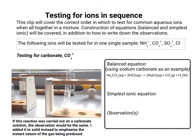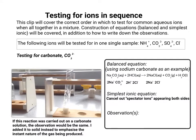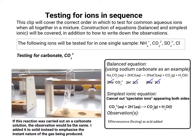For the balanced equation I'll use sodium carbonate as my example. It produces a salt (NaCl), CO₂ as a gas, and H₂O as a liquid. For the simplest ionic equation, you look at everything that is aqueous — sodium carbonate, hydrochloric acid, and sodium chloride — and break them into their constituent ions. You then cancel the spectator ions that appear on both sides, leaving the simplest ionic equation. The observation is effervescence or fizzing as the acid is added.